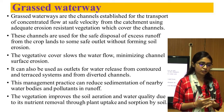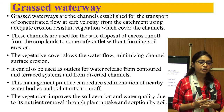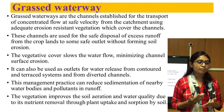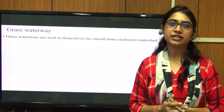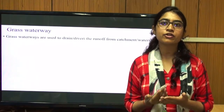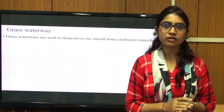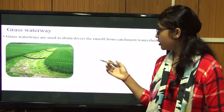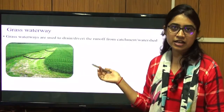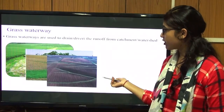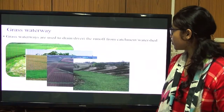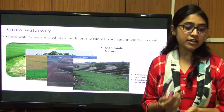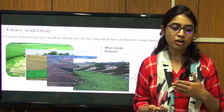This management practice can reduce sedimentation of nearby water bodies and pollutants in runoff. The vegetation improves soil and water quality through nutrient removal via plant uptake. Grass waterway is essentially a simple drainage channel used to drain or divert water from the catchment or watershed. It may be manmade or natural, is covered with erosion-resistant crop, and is constructed along the slope of the area.